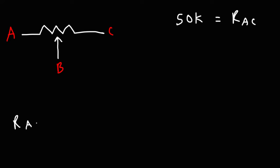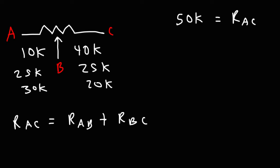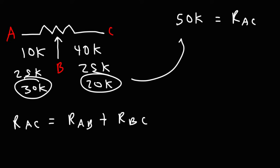Also, the resistance between points A and C is the sum of the resistance between points A and B and the resistance between points B and C. So let's say you turn the dial such that the resistance between A and B is 10 kilo ohms — then the resistance between B and C is going to be 40 kilo ohms. If you turn the dial halfway, AB will be 25 and BC will be 25. If AB is 30, BC is 20. These two must always add up to the total resistance.